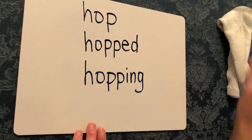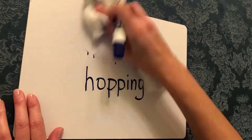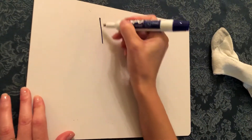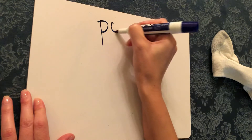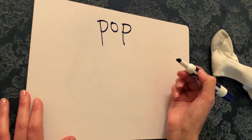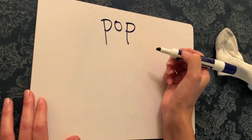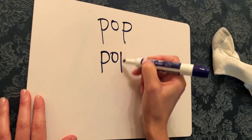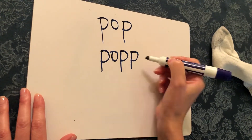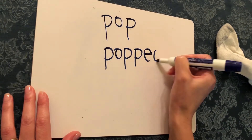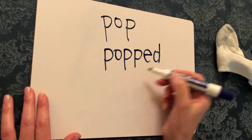Let's try another example — the word pop. Again, you're going to double your final consonant. So you're going to double your P and add the ED suffix. That makes the word popped.